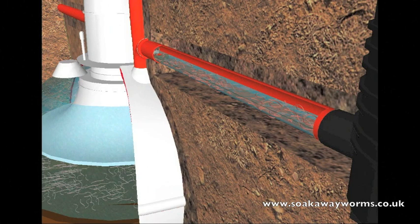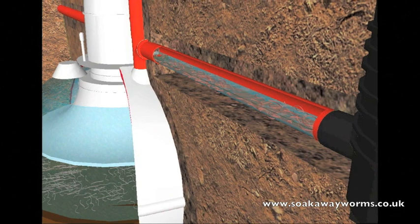Once they start doing this, the liquid is able to freely move once again from the house into the tank, into the soakaway, and then to naturally drain away into the soil.